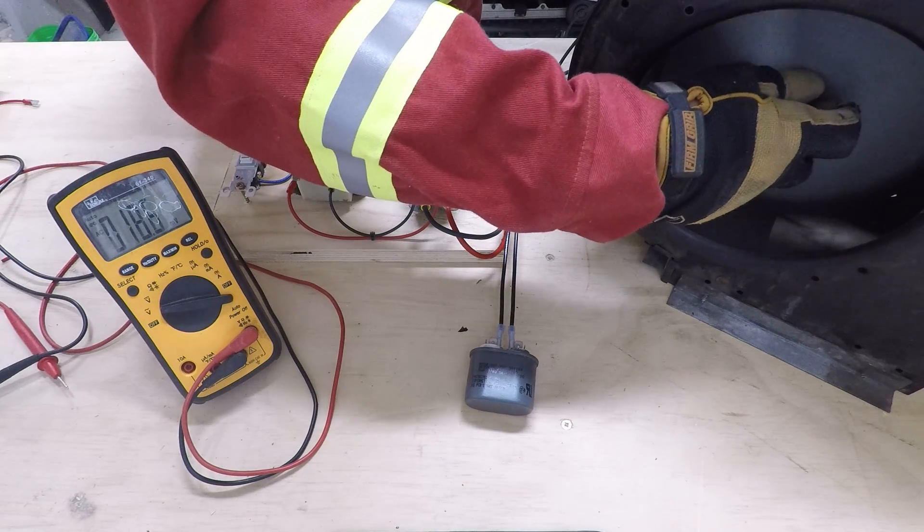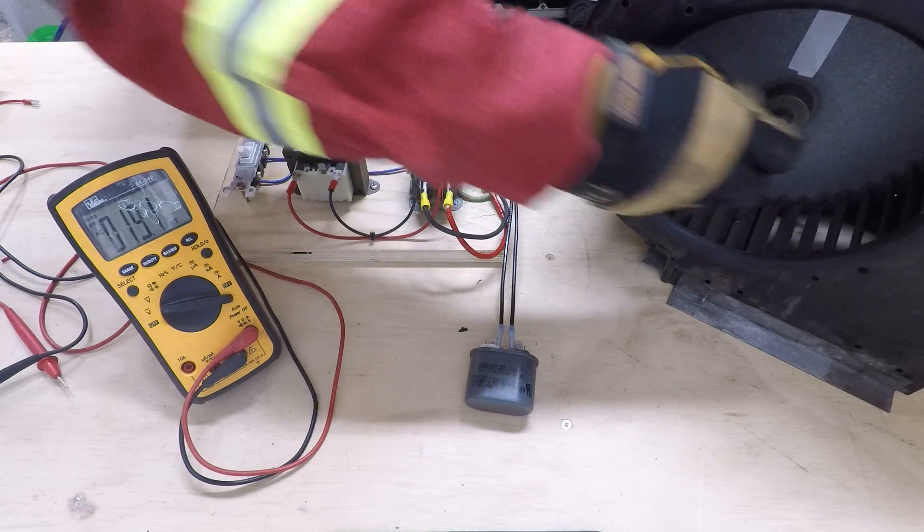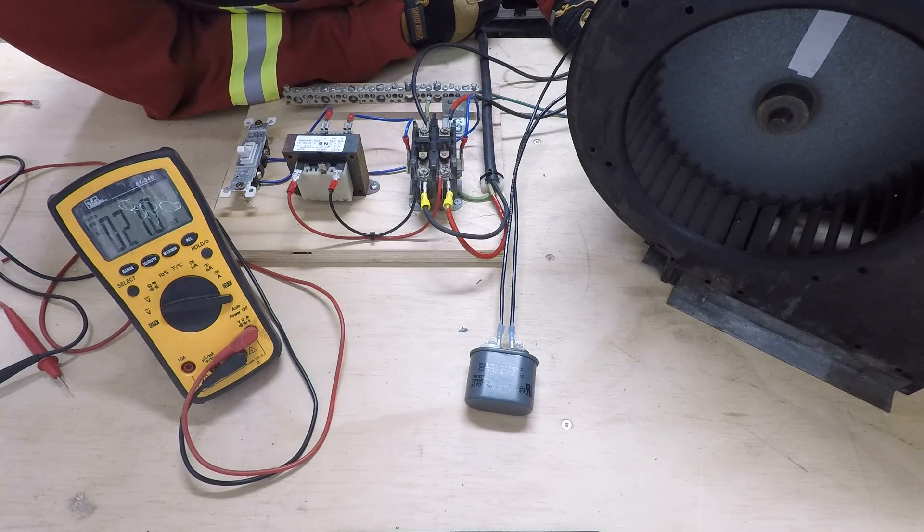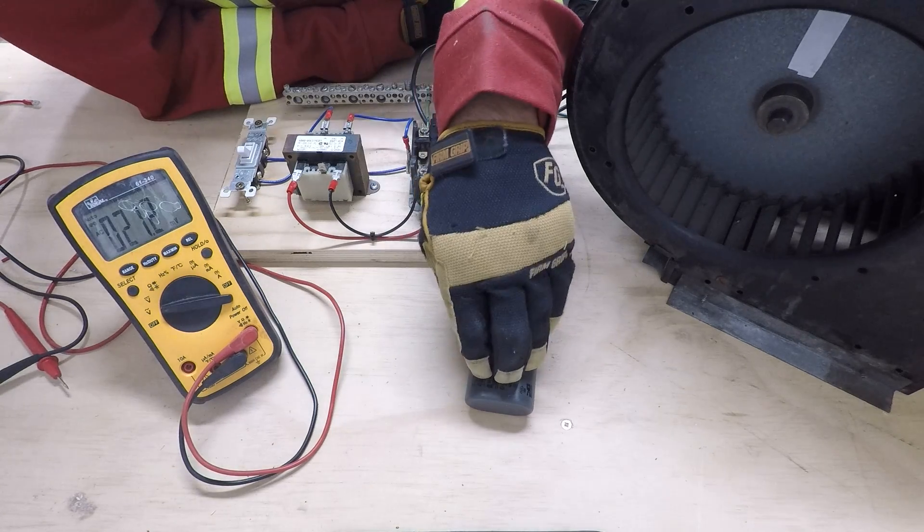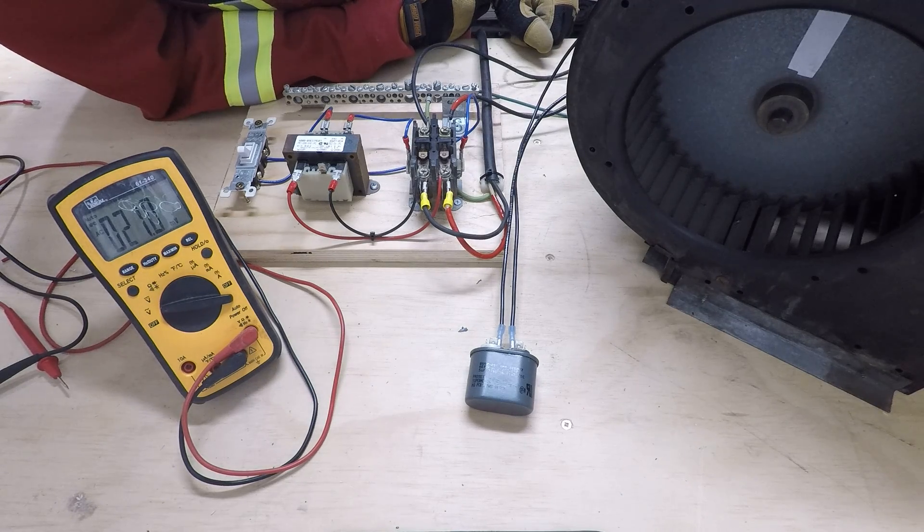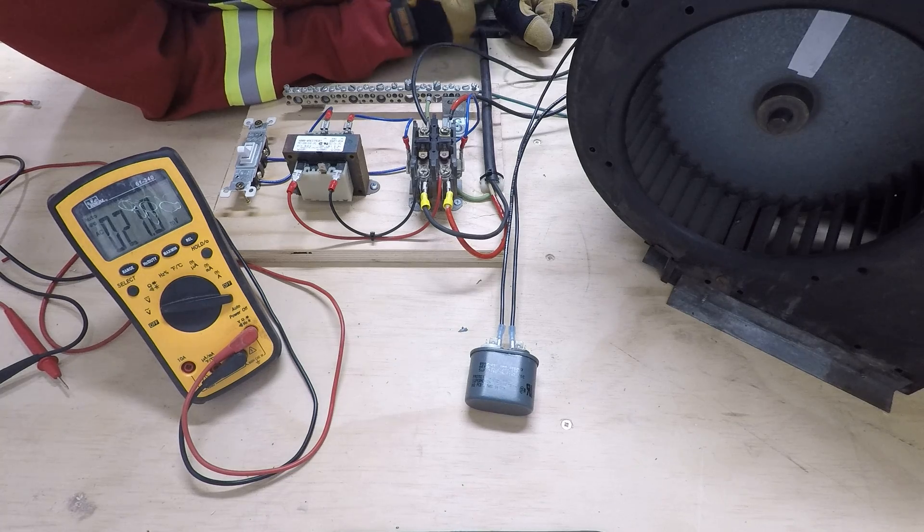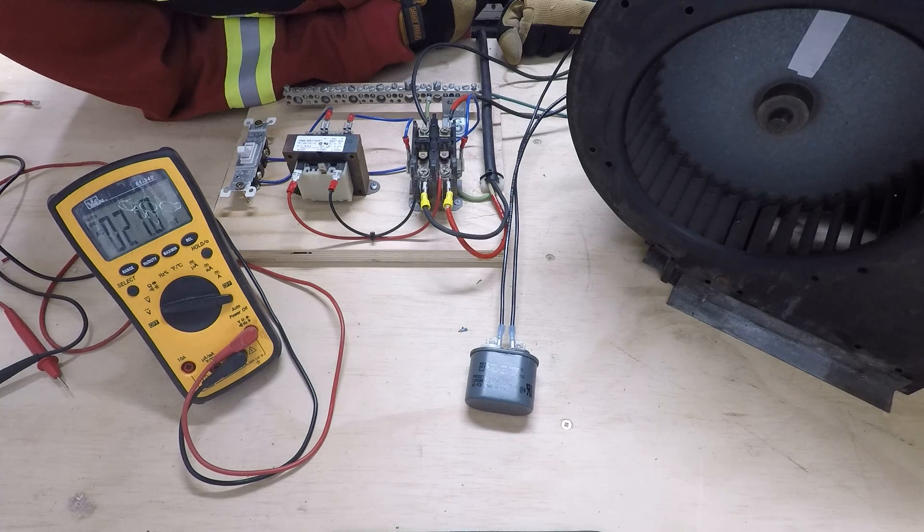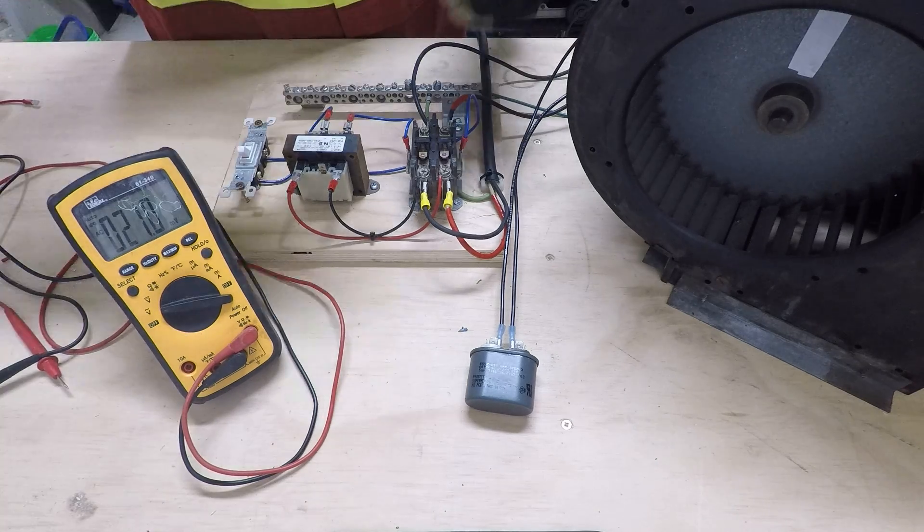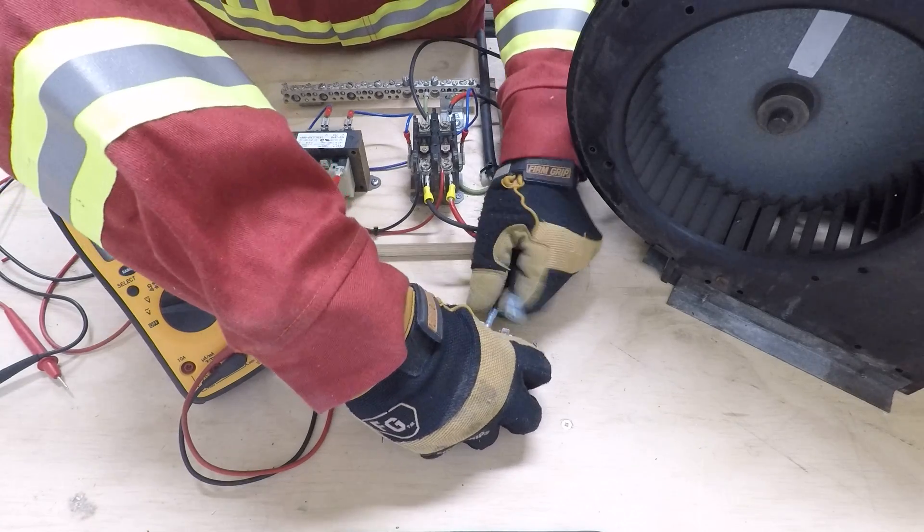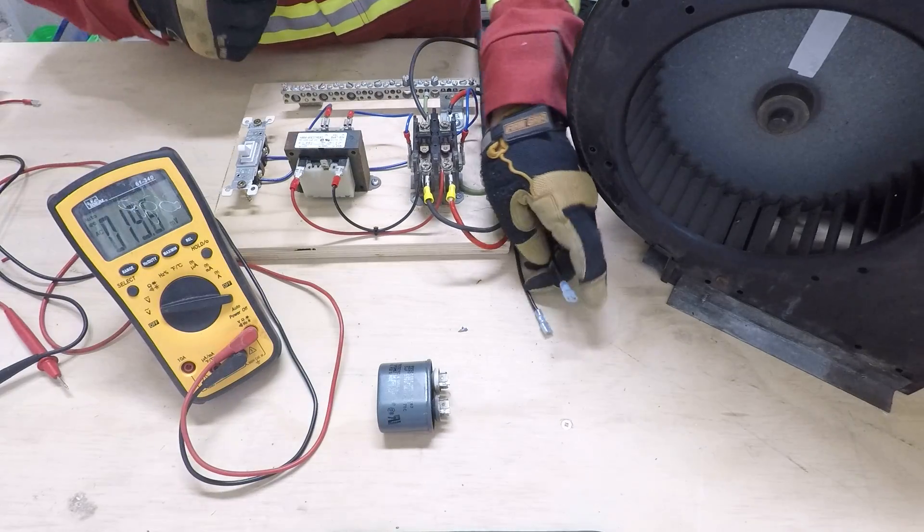If I flip the switch, the motor is going to start, and you can see it started in a clockwise rotation. Now what I'm going to show you is what happens sometimes when these capacitors fail. When the capacitor fails, the motor isn't able to start spinning. The capacitor provides kind of a little bit of extra torque boost in the beginning, and that's what gets it rotating.